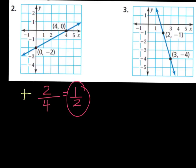Let's verify: our slope is one-half, meaning rise one, run two. If I go up one, over two from my starting point, I land on the next point on the line. Up one over two again — there's the next point. So two-fourths is the same as one-half, and you can see it works on the picture — both slopes get you to the next points.